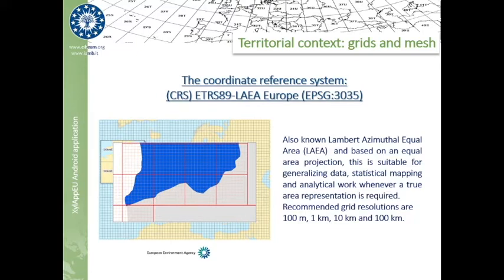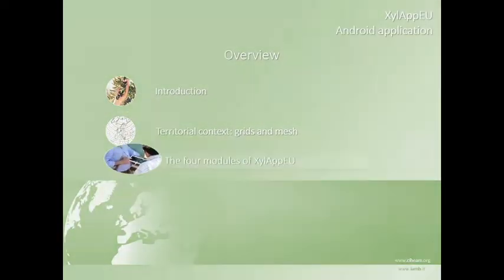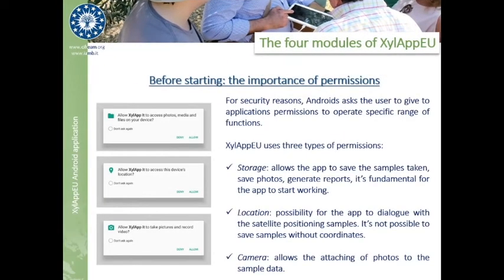It's now time to have a closer look at the app. The first thing to notice is that Xylap EU relies heavily on the sensors inside your tablet or smartphone. That's why it's important to grant access to the storage, location, and camera respectively — to allow the saving of the sample, to automatically set the location of the sample taken, and to eventually take a picture of the sample.